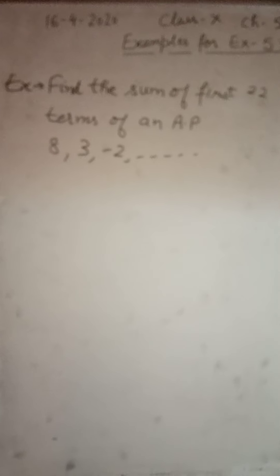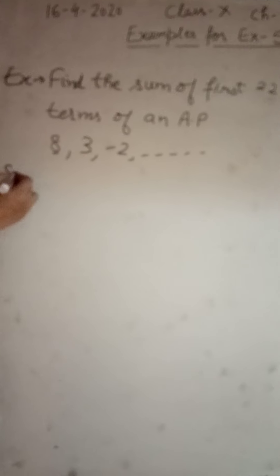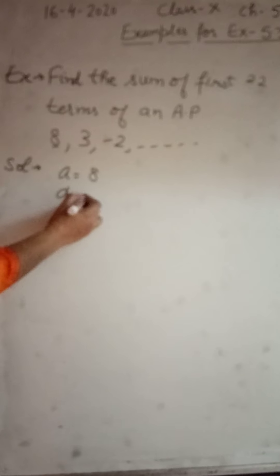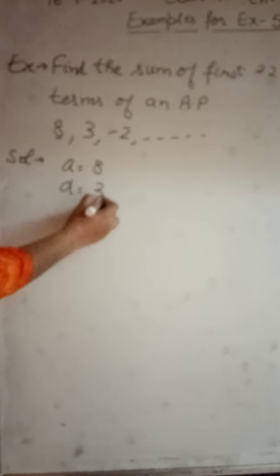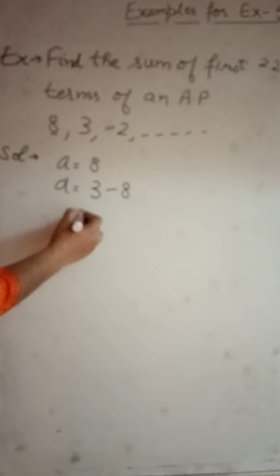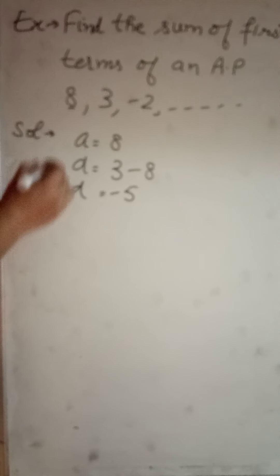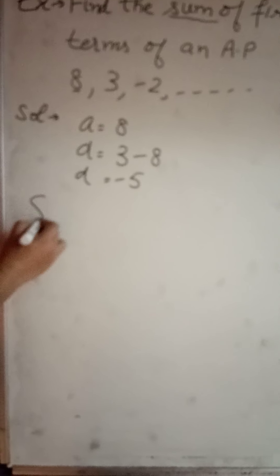You know that, what is a? Value of a would be 8. Find out d. d would be a2 minus a1. That means d we have obtained, minus 5. Now we want to find sum of terms, so I will be writing formula of S_n.